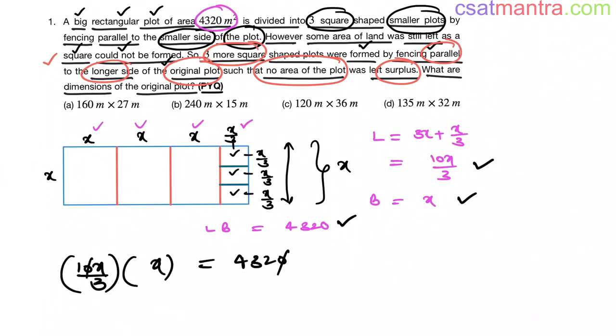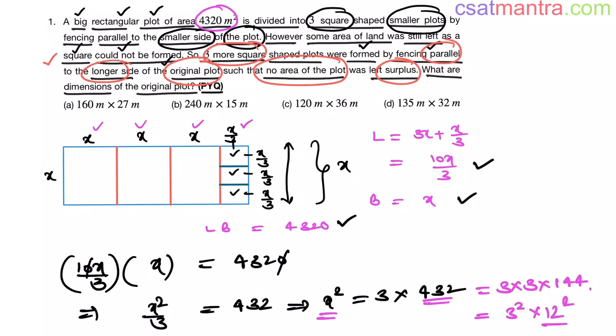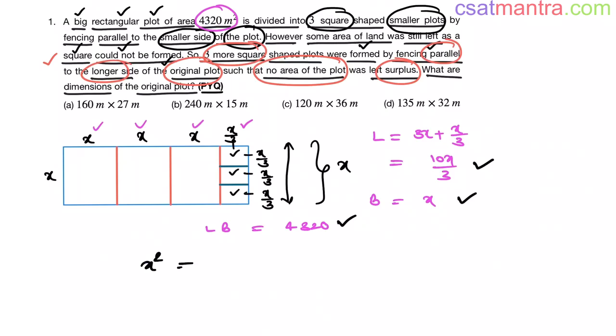Zero cancels out. This is x square by 3 is equal to 432. This implies x square is equal to 3 into 432. Since this side has square, we will be having one more 3. So dividing this number with 3: 3 into 144. So this is 3 square into 12 square. 12 square is 144. So x square is equal to 3 square into 12 square. So x is equal to 3 into 12, that is 36.